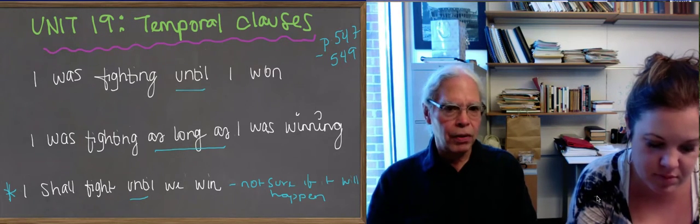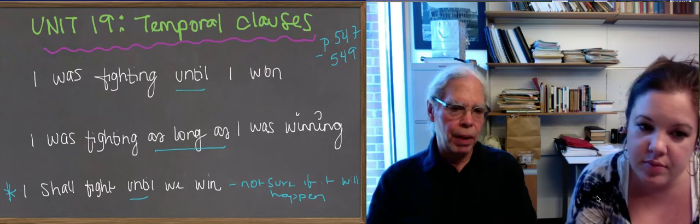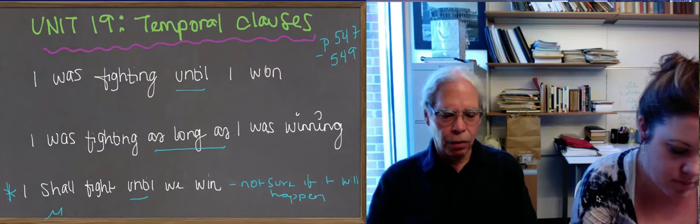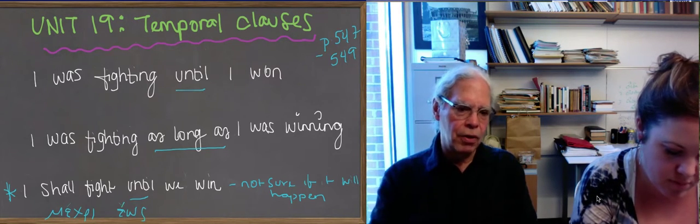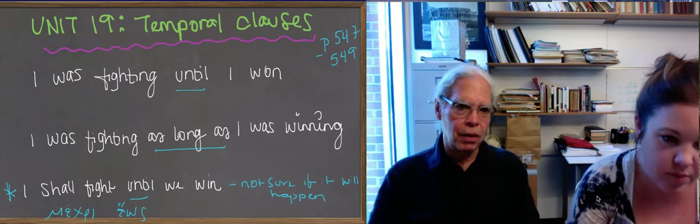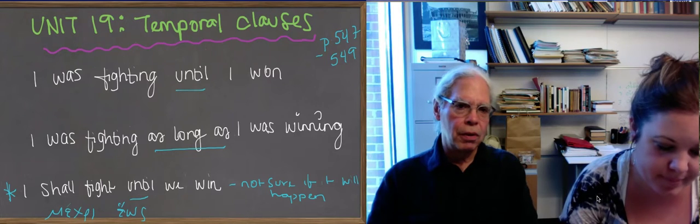So in the case of until, there are two words in Greek for until, mecri and heos. And if it's a fact, you just use the appropriate tense of the indicative. So the first one, until I won, you'd use mecri, heos, and the aorist.